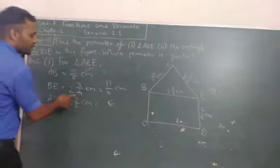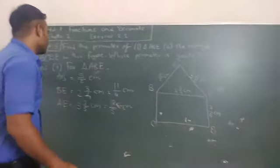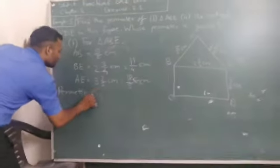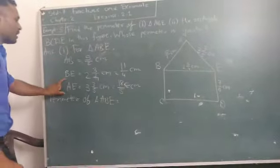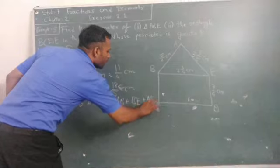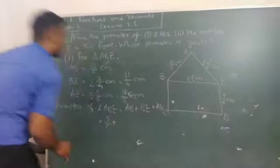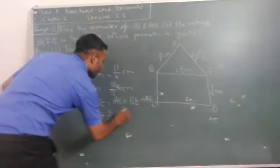So, 5 times 3 is 15, 15 plus 3 is 18/5 cm. Now, perimeter of triangle ABE: P is equal to AB plus BE plus AE. AB is 5/2, BE is 11/4, and AE is 18/5. These are unlike fractions, so we find LCM of all.